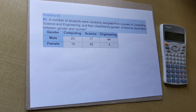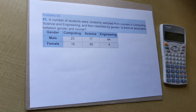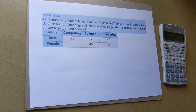Welcome to this video tutorial on contingency tables. In this tutorial I will present the workings to problem number two in problem set 5D in the textbook Applied Statistics. The problem reads like this: a number of students were randomly selected from courses in computing, science and engineering, and then classified by gender. Is there an association between gender and course? The data is provided in the table.